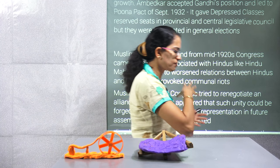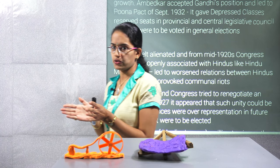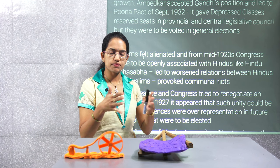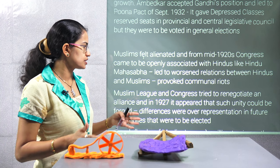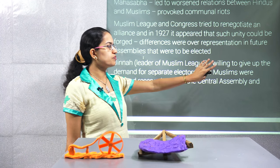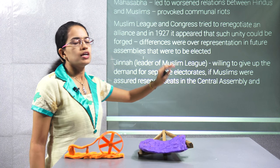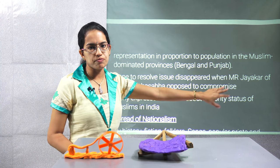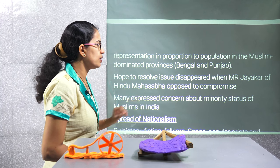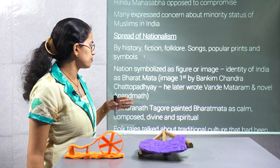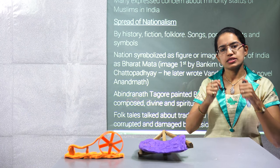After the Khilafat and non-cooperation movements, there was a growing divide between Hindu and Muslim ideology. Congress was considered a predominantly Hindu group, with organisations like the Hindu Mahasabha. Muslims felt alienated, and Hindu-Muslim tensions gained momentum, with more communal riots breaking out. Congress was trying to negotiate and bring unity. Jinnah, the leader of the Muslim League, was willing to give up the demand for separate electorates only if Muslims were given reserved seats in the central assembly and representation proportional to their population in Muslim-dominated provinces like Bengal and Punjab. However, Hindu Mahasabha leader Moonje opposed any compromise, and the Hindu-Muslim divide persisted.